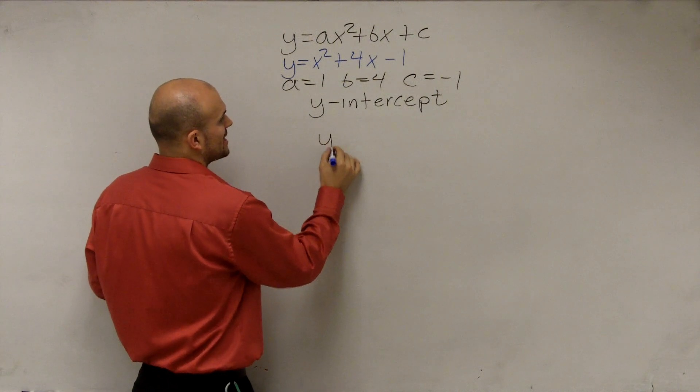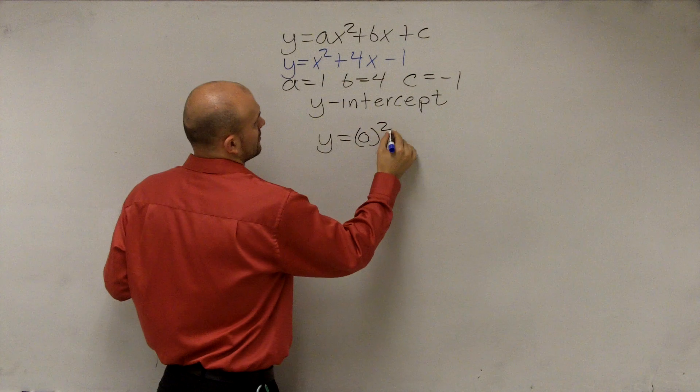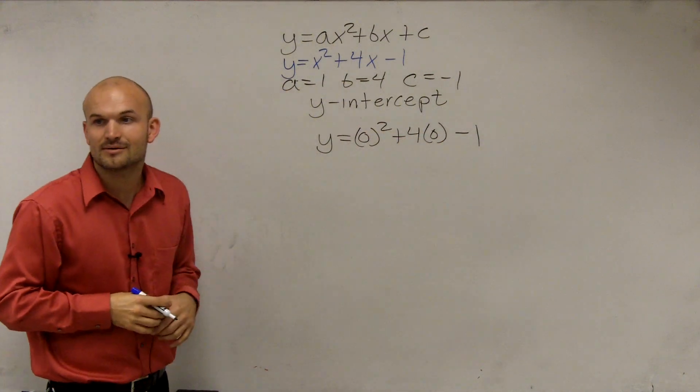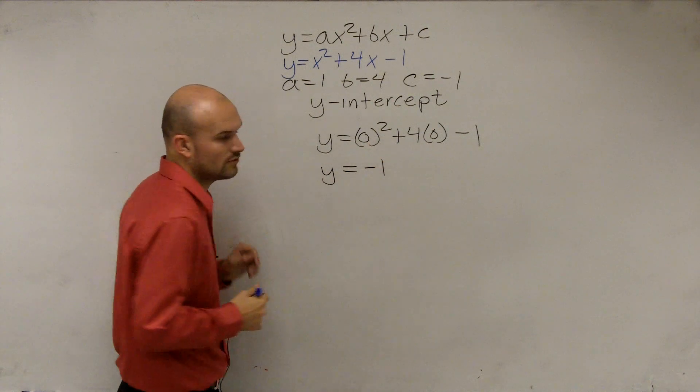So to find the y-intercept, I just set x equal to 0. So you end up just getting y equals negative 1.